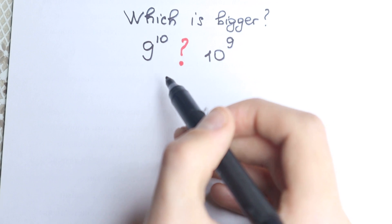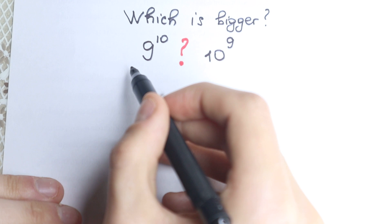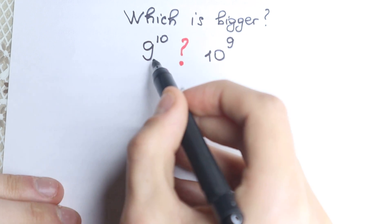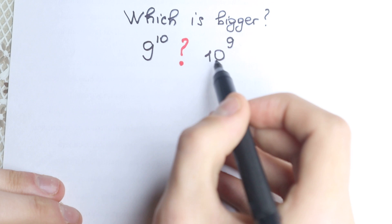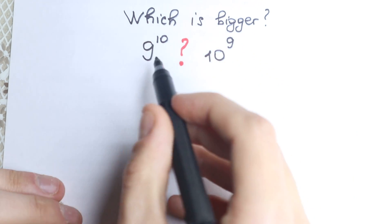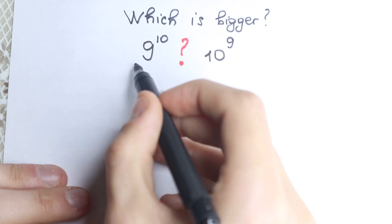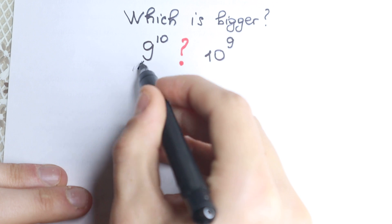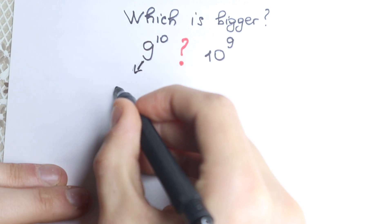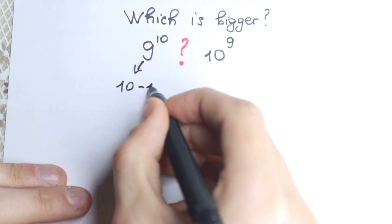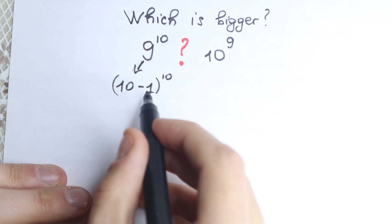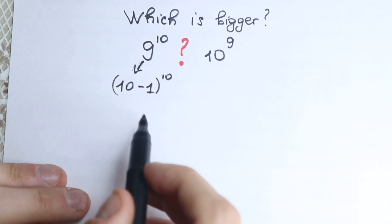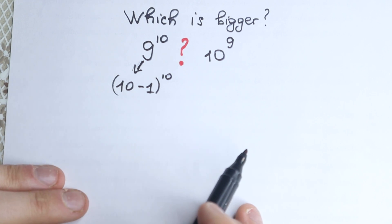So this is my approach to this question, and I want to start with this step. First of all we have 9 to the 10th power — I want to start with the left hand side. Let's write this 9 as (10 minus 1), so we have (10 minus 1) to the 10th power.